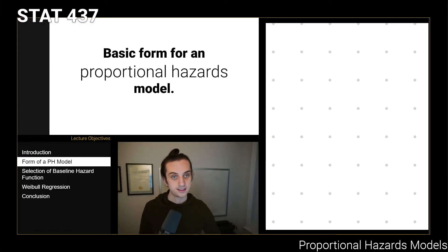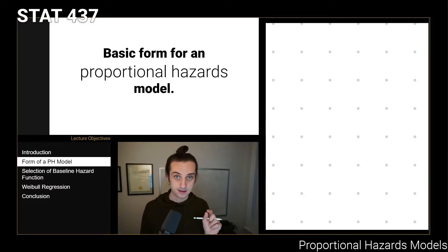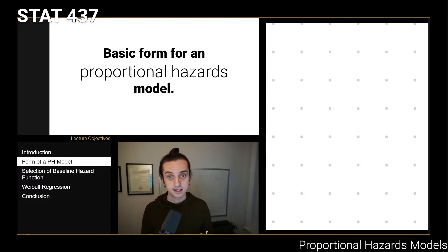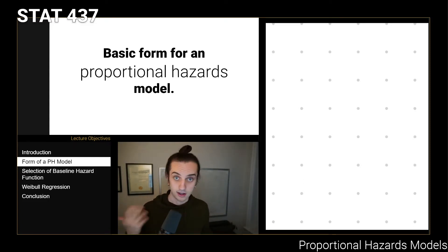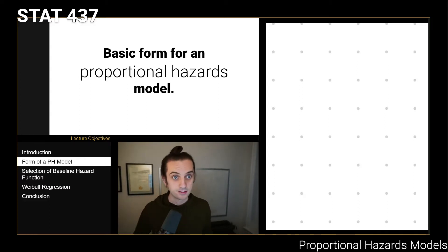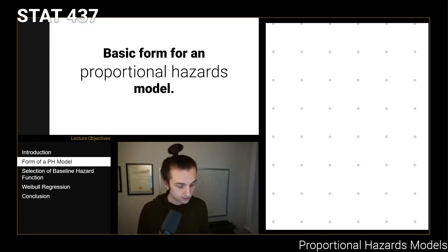The first thing to note is that the form of a proportional hazards model — the mathematical specification for it — depends only on specifying something for the hazard function. As we've discussed in the continuous time setting, the hazard function uniquely defines the distribution that we're dealing with. So this isn't a problem, but it is something interesting to note. We're not specifying something for the mean, not directly at least, and not specifying something for the CDF. We are specifying a model that directly corresponds to what the hazard would be.